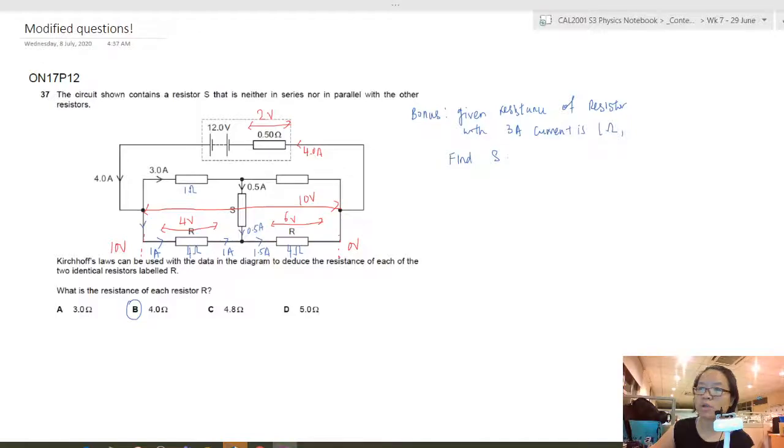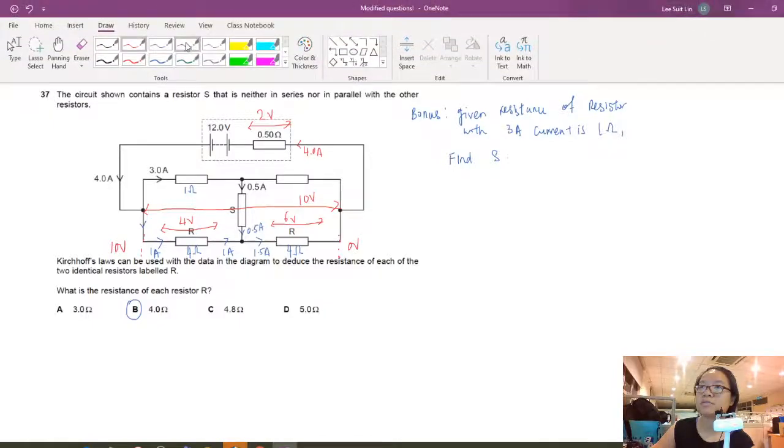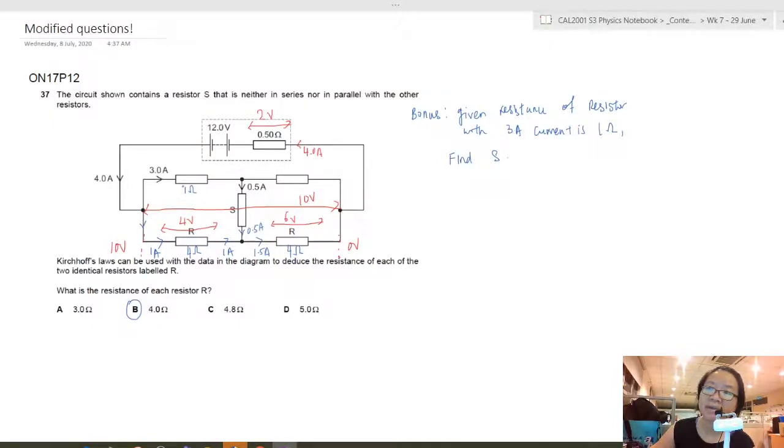Likewise here, if given this is 1 ohm, you can find the resistor of these two other unknown resistors already. Let me change color pane. So if here to here is 1 ohm, then here to here would be 3 volt—3 times 1 is 3 volt. If this is 10, this means here to here is 7 volt.